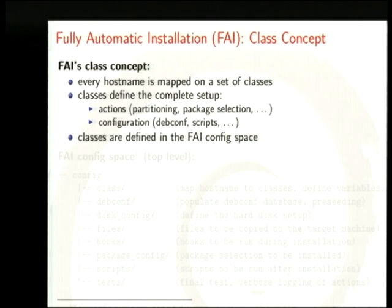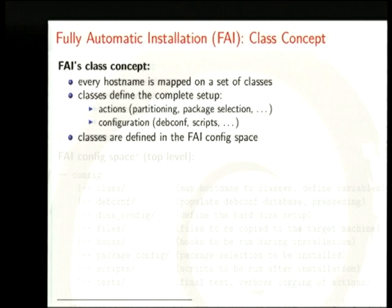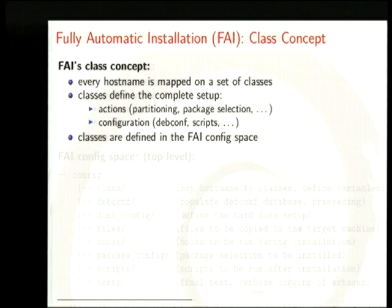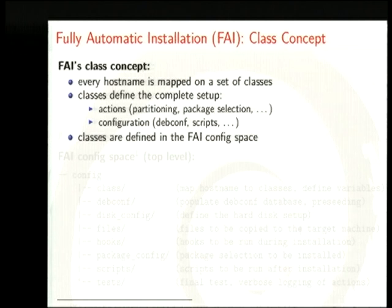FAI uses classes — think of them not as complicated programming classes, but simply as containers where you drop actions or attributes. Every hostname is mapped onto a set of classes, and these classes define the complete setup of the machine. How to prepare the disks is defined in a class. Which packages to use is defined in a class. The configuration is also defined in these classes.